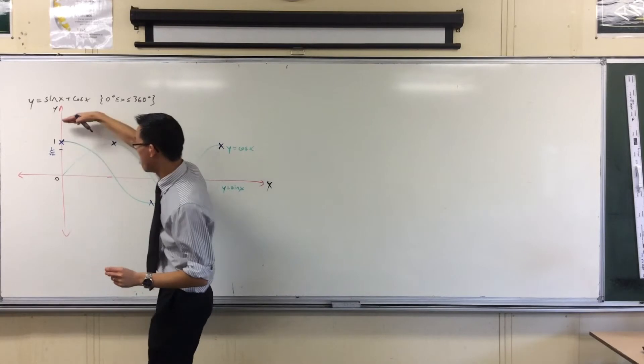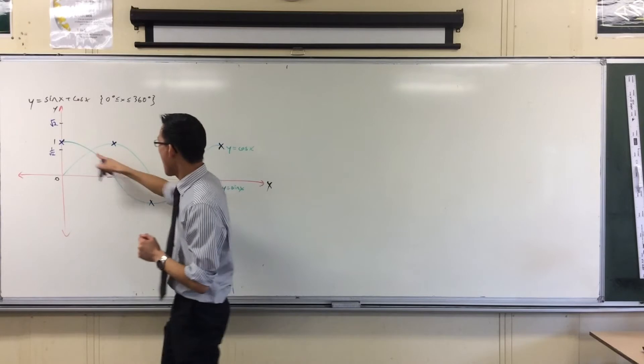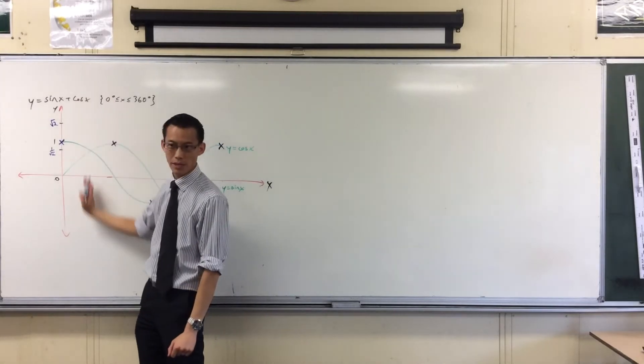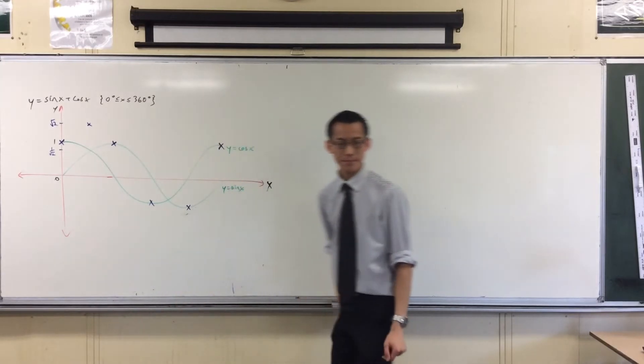So if you go up about 40%, that should be where the square root of 2 is. And at x equals 45 degrees, I'm passing through there.